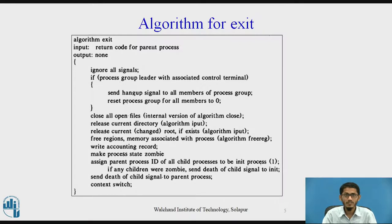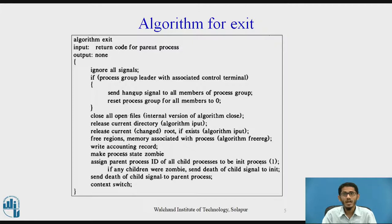It releases the inodes it had accessed for the current directory and change root if it exists via the algorithm iput. The kernel releases all user memory by freeing the appropriate regions with algorithm detach-region and changes the process state to zombie. It saves the exit status code and accumulated user and kernel execution times of the process and its descendants in the process table. The kernel also writes an accounting record to a global accounting file containing runtime statistics like user ID, CPU and memory usage, and amount of IO for the process.